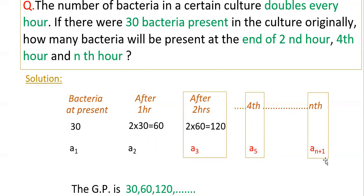Here you have to find a₃, a₅ and aₙ₊₁ because we have to find end of second hour, fourth hour and nth hour. You have to find all these three terms.